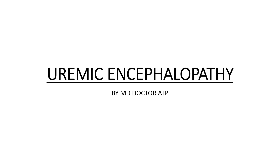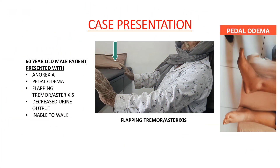Hello friends, in today's video we are going to learn about uremic encephalopathy. The case presentation: a 60-year-old male patient presented in the emergency department with complaints of anorexia, bilateral pedal edema, flapping tremor also known as asterixis, decreased urine output, and the patient is unable to walk.